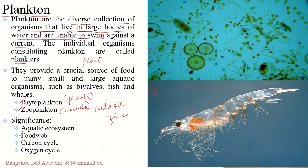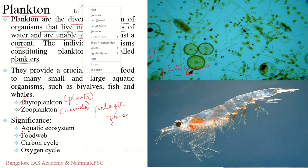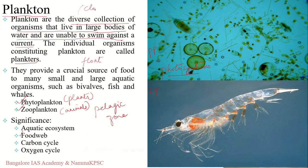Phytoplankton account for almost half of the photosynthesis on the planet, making them one of the largest producers of oxygen. Since they depend on sunlight for photosynthesis, they are found very close to the water surface where sunlight penetrates — not at greater depths, unlike neuston which are right at the surface.